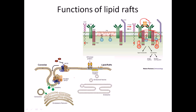Another function of lipid rafts is endocytosis. In the normal case, suppose this is the molecule you need to endocytose — we have GPCRs as receptors, and we also have GPI-linked proteins or phosphatidylserine-linked proteins present in the lipid raft regions. These regions are very important for attaching this type of molecule.